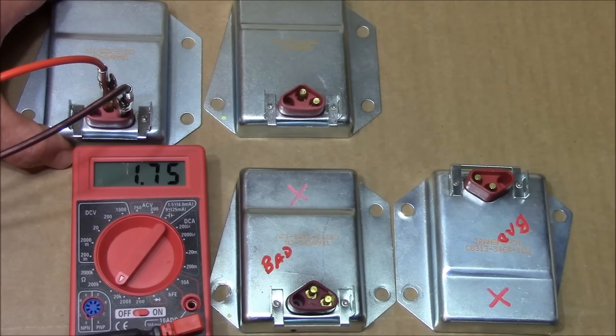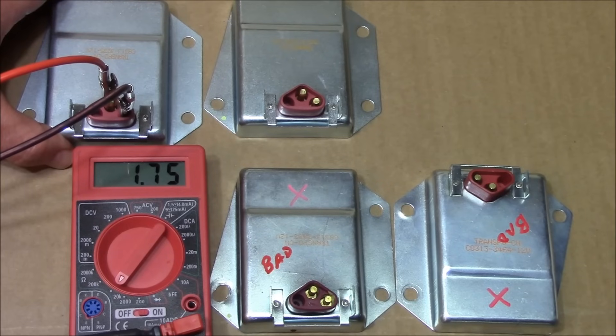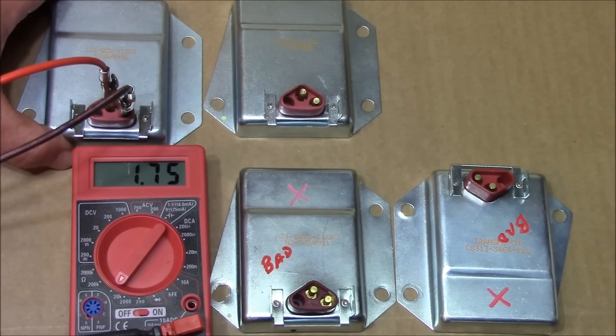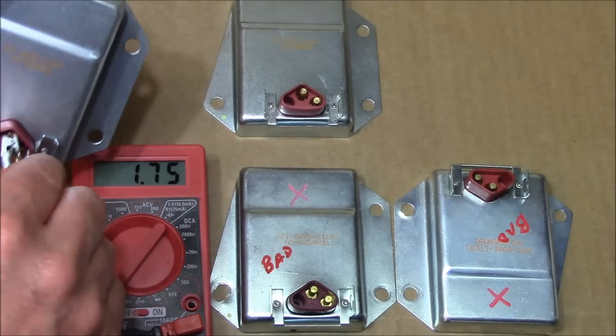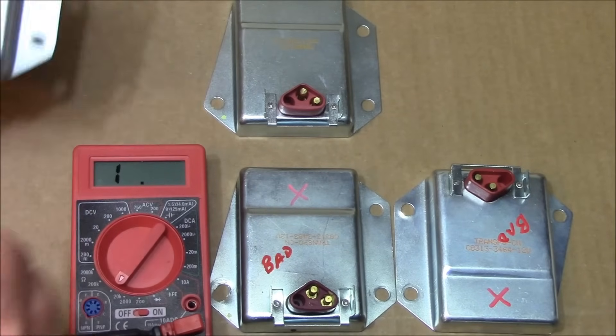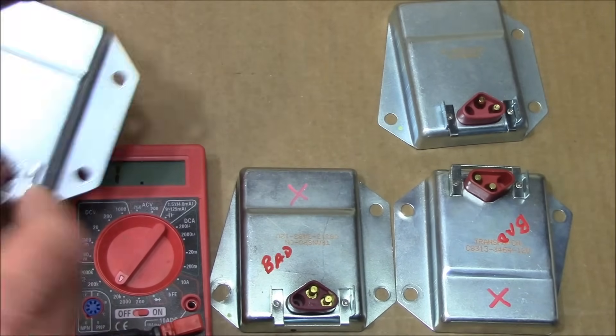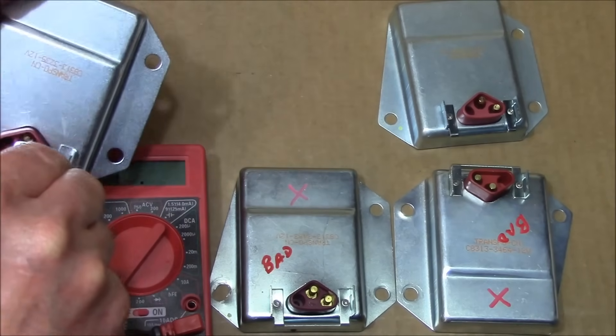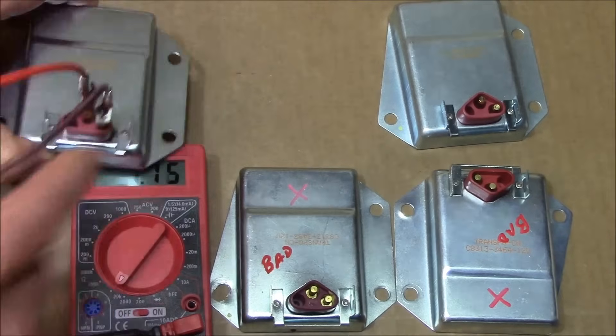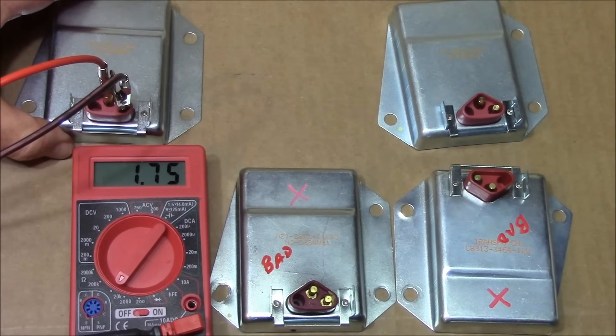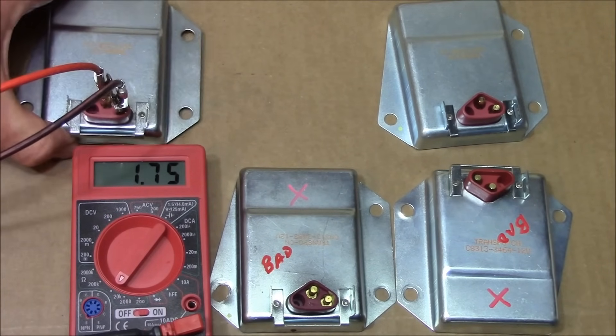That's a brand new one that will preset the alternator at about 14.3 volts. That's what they should be. Let's test another one. Here's another brand new one and you can see it's 1.75, 1.76, right in that area.